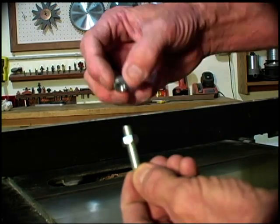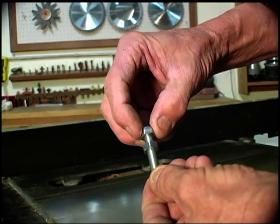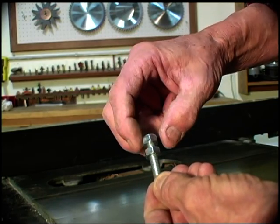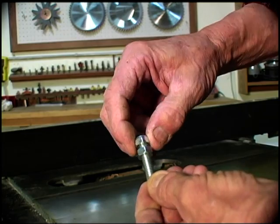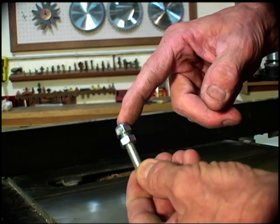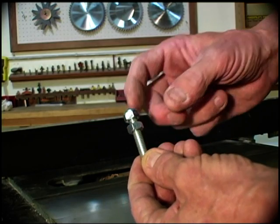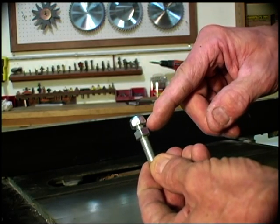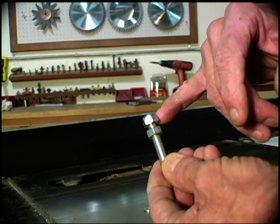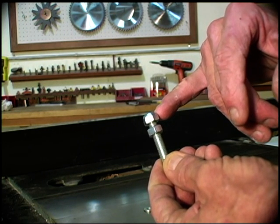The second is a nylon lock nut that we include in the kit to make sure that once you get this set up nothing can loosen. When you put these two nuts on, you want to make sure that you have at least three sixteenths of an inch between the two nuts, because once we get this installed we want to make sure that the stud extends all the way through the lock nut.